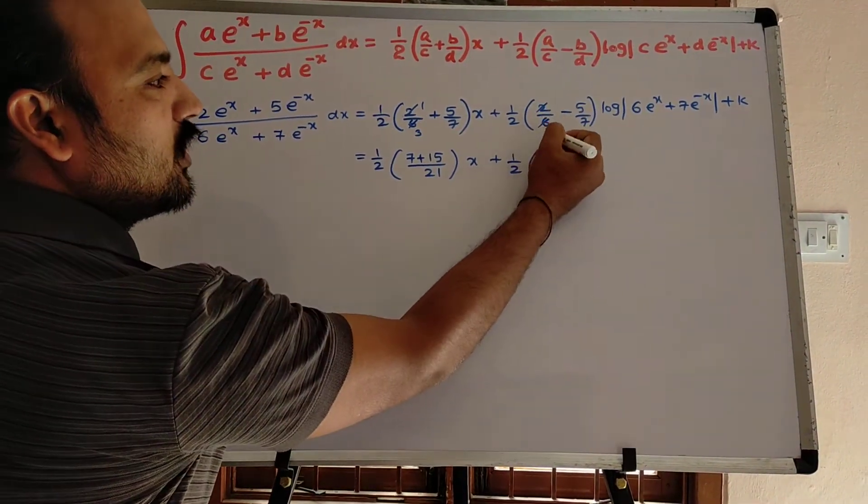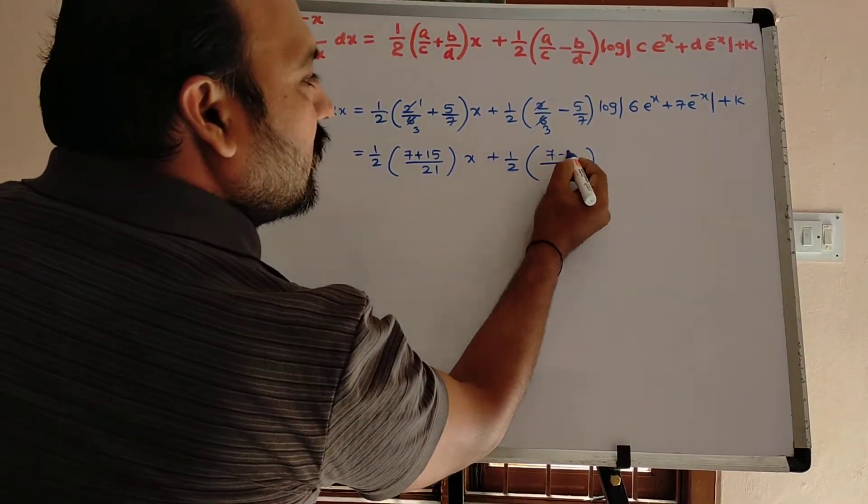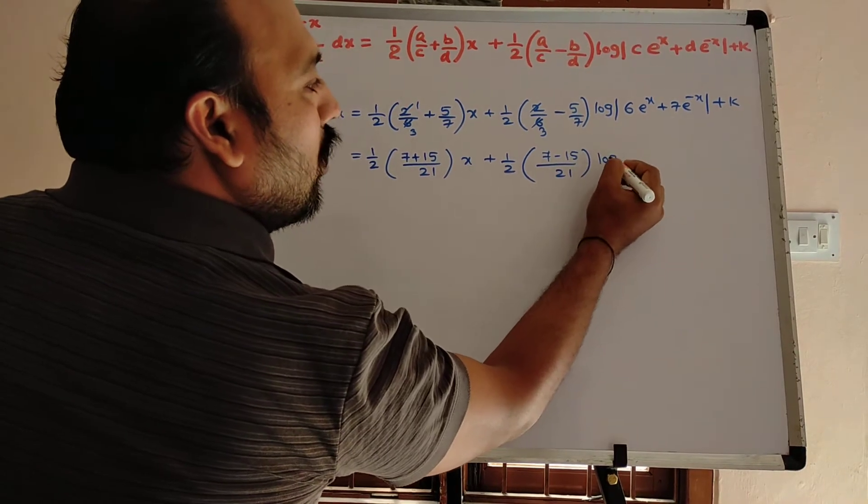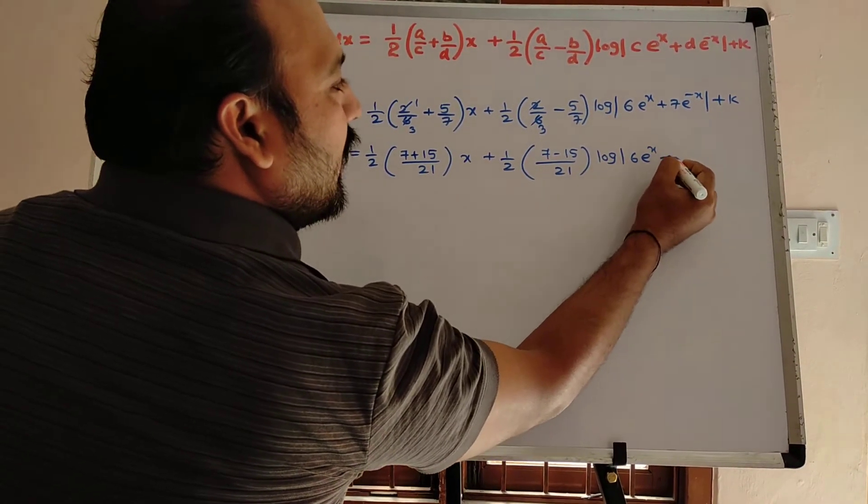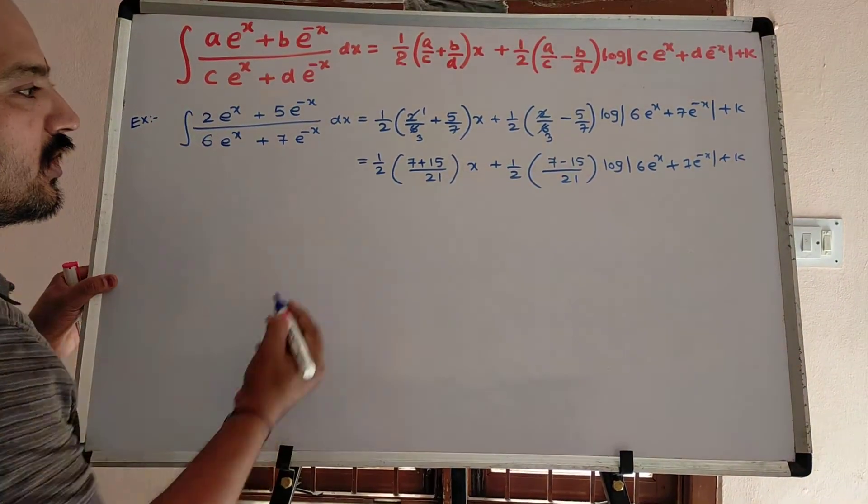1 by 2, here 2 ones are, 2 threes are, LCM is 21, 7 minus 15 into log mod 6 e power x plus 7 e power minus x plus k.